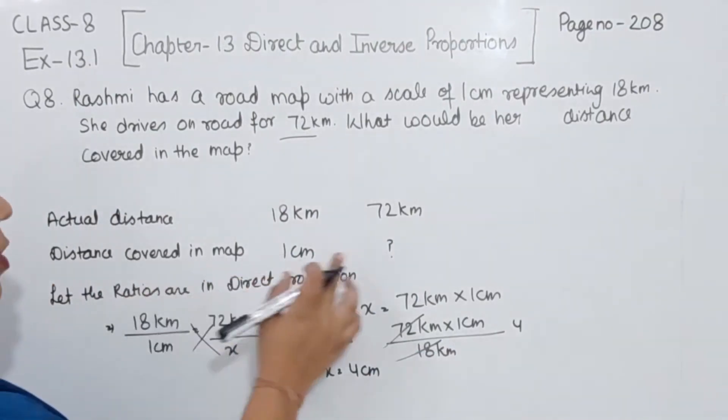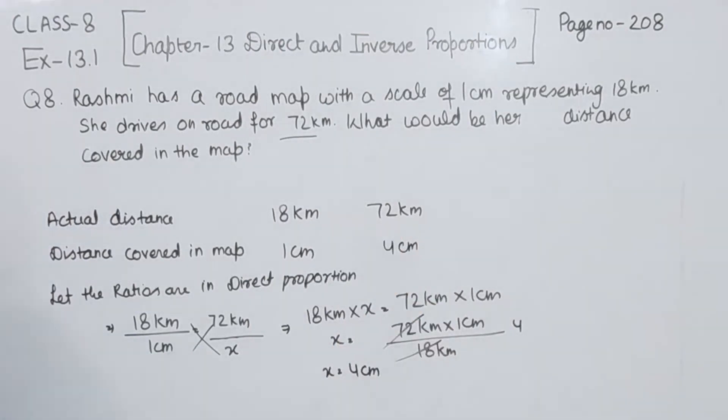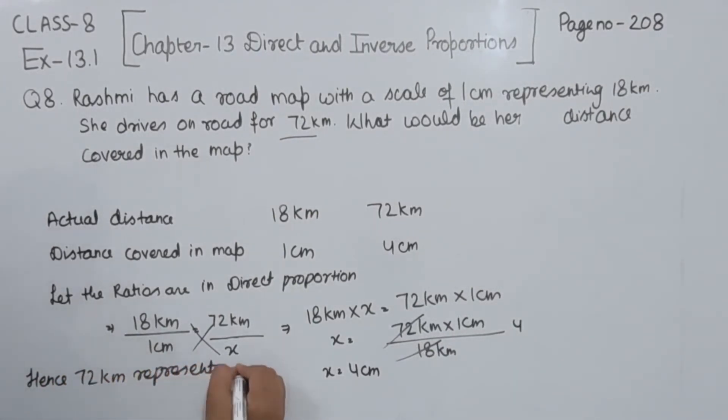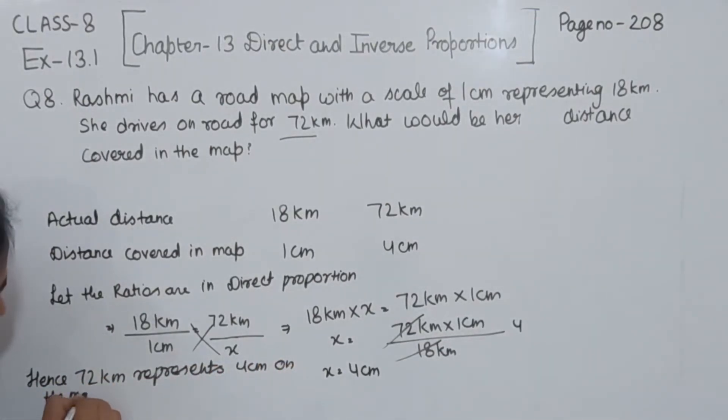So the distance covered on the map we are having as 4 cm when the actual travel is 72 km. I am going to write this statement here. Hence 72 km represents 4 cm on the map.